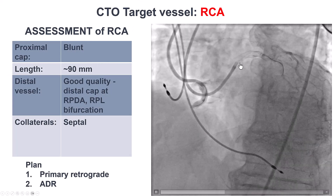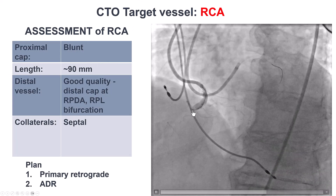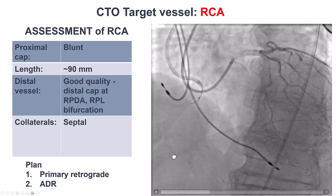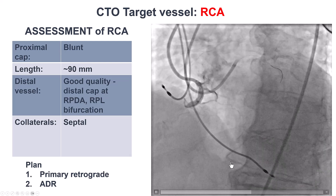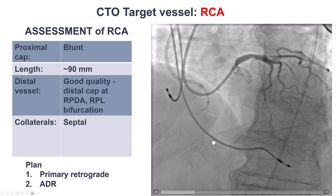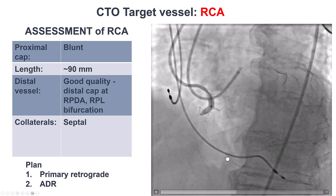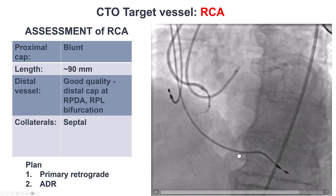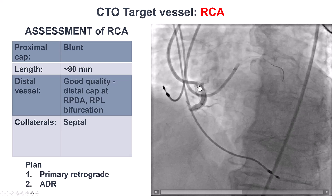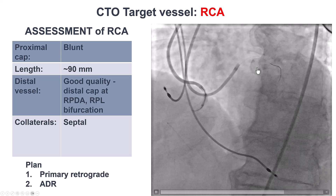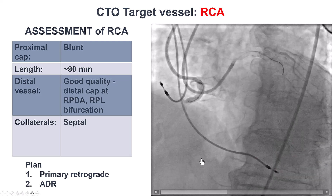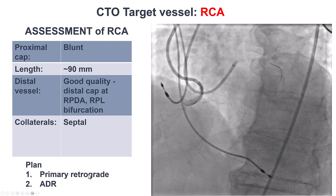Dual injection demonstrated that the CTO had a clear but blunt proximal cap. It had a long occlusion length, with the distal vessel reconstituting through septal collaterals. The distal cap seemed to be at the bifurcation of the PDA and the right posterior lateral. Given the blunt proximal cap, the difficulty with support and engagement, the presence of septal collaterals, two previous failed attempts, and the long occlusion length, we decided to go with the primary retrograde approach.